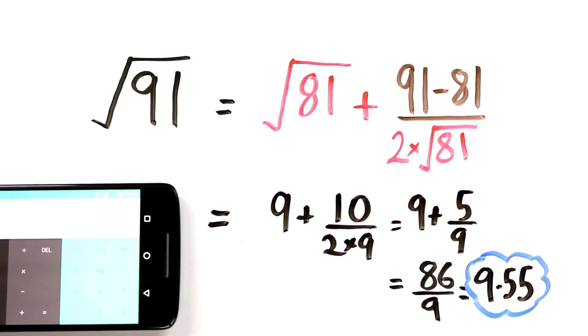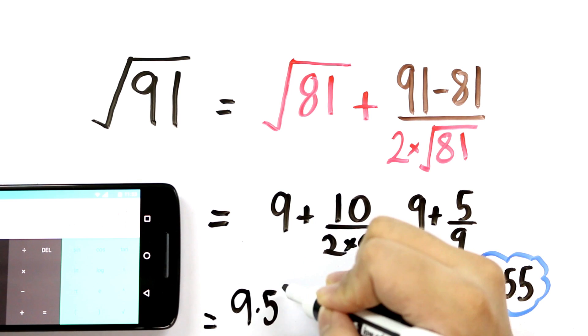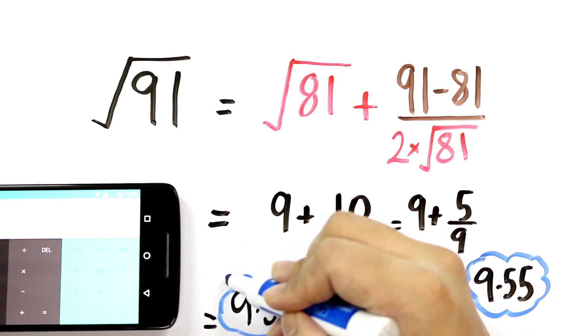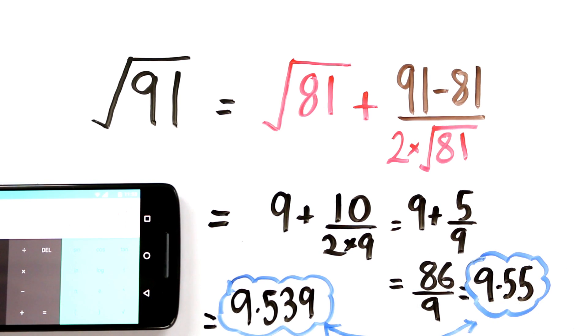If you find the answer using calculator you will get 9.539 which is almost 9.54. So the calculated value is approximately equal to our mathematically solved value.